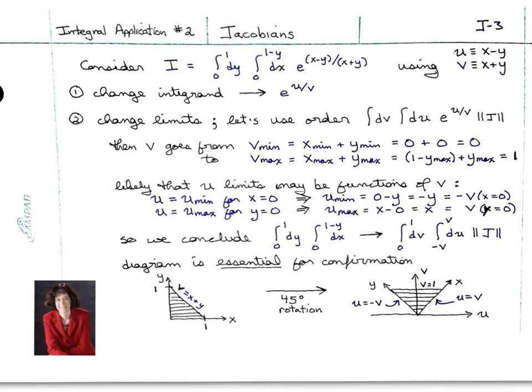So, we conclude that the integral we're trying to do goes from having limits zero to one for y, and zero to one minus y for x, to having limits zero to one for v, but negative v to v for u. And don't forget the Jacobian factor. Of course, we will be putting in the integrand in both places as well. But just thinking about the limits for the moment, it's often useful to draw a diagram to confirm.